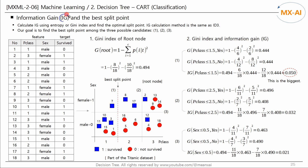Let's use information gain to find the best split point. Information gain is calculated using entropy or the Gini index. The calculation of information gain is the same as in ID3. The data to be used is part of the Titanic dataset. There are two features, PCLASS and SEX, and one target class, Survived.